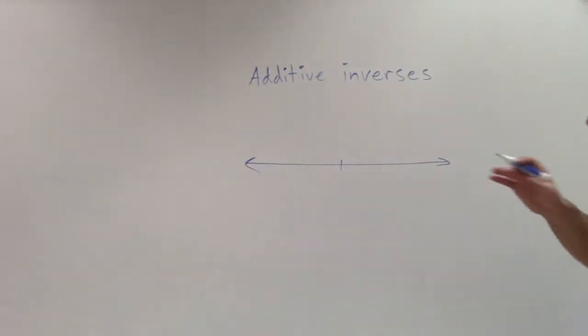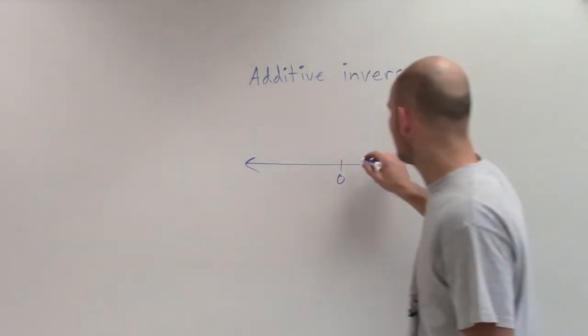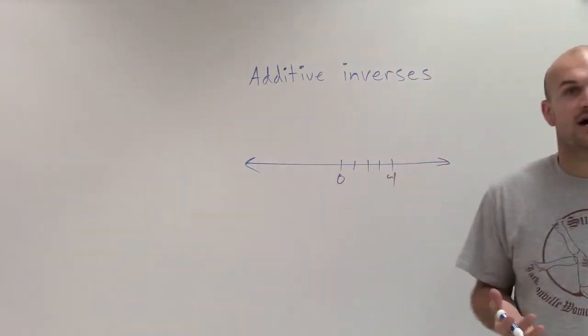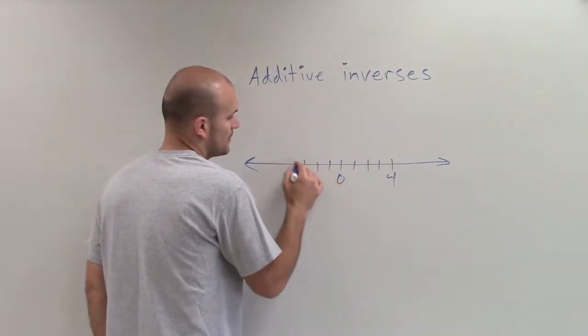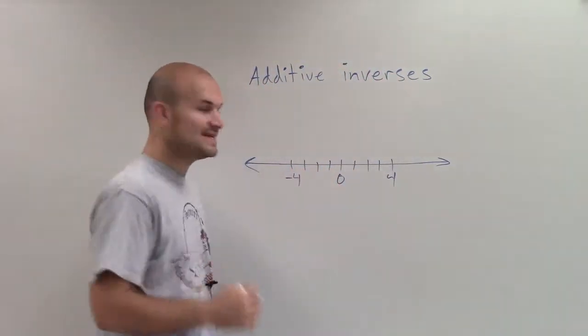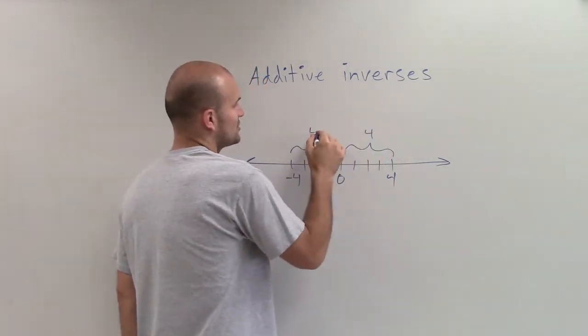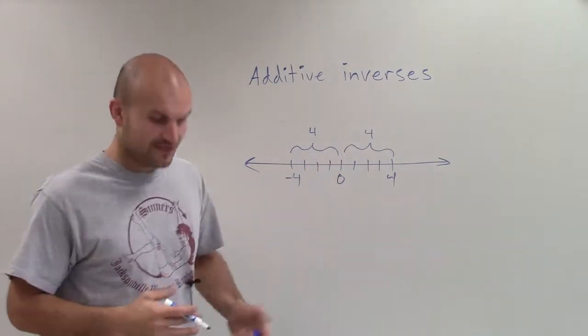So when looking at additive inverses on a number line, if we pick a number, let's say positive 4, the inverse of positive 4 is going to be negative 4, as it's the same distance from 0 except it's now in the negative direction. So I still have it four units away from 0, but now it's in the negative direction.